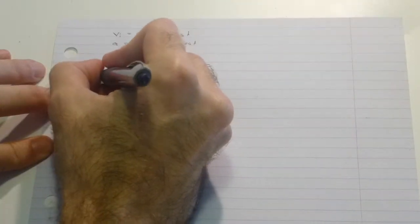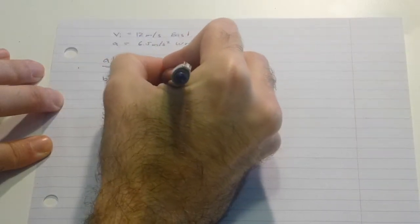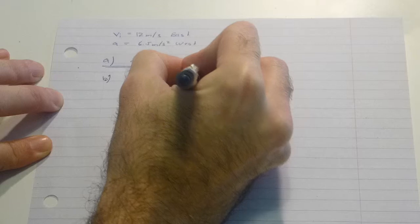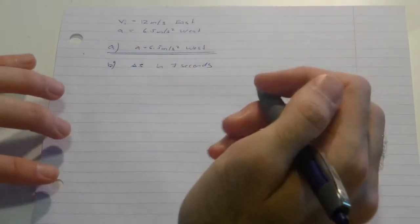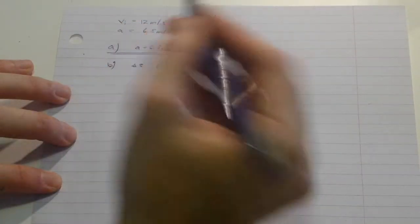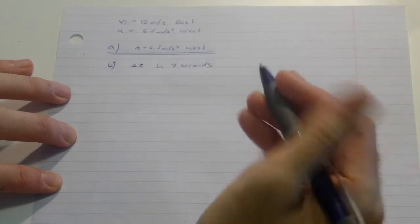Now in B, they want to know the displacement in 7 seconds. There are several ways of solving that. As we know we have a constant acceleration, we can use one of our formulas.